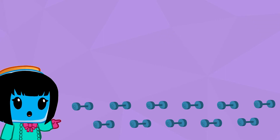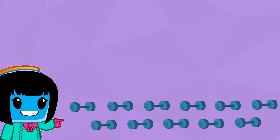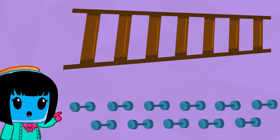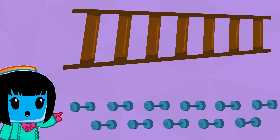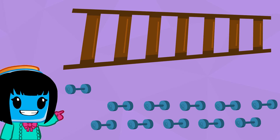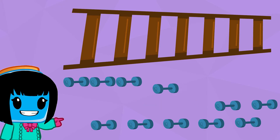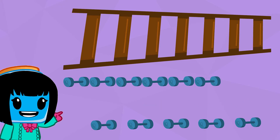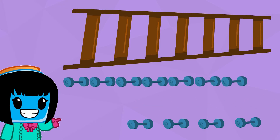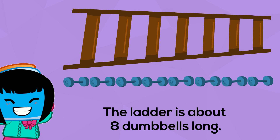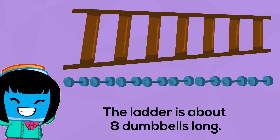Lastly, use the dumbbells to measure the length of the ladder. If we line up the dumbbells below the ladder we will need to use one, two, three, four, five, six, seven, eight dumbbells. So the ladder is about eight dumbbells long.